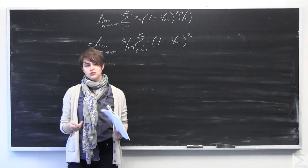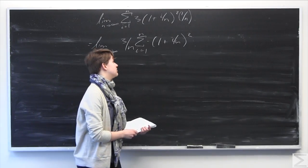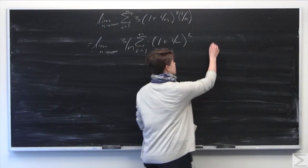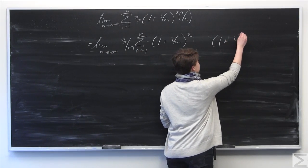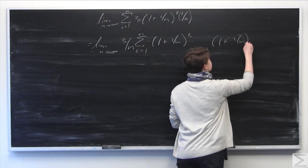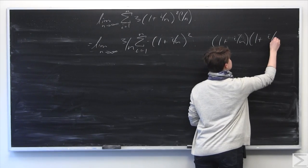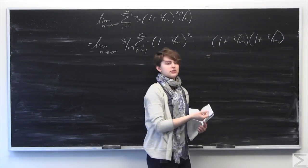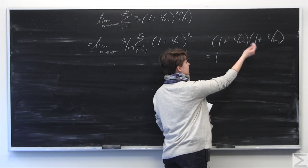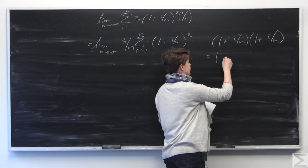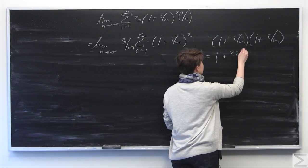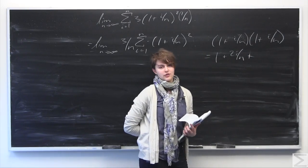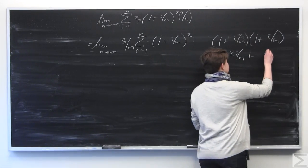Our next step is to FOIL out (1 plus i over n) squared. So (1 plus i over n) times (1 plus i over n) equals 1 times 1, which is 1, plus i over n plus i over n, which is 2i over n, and then i over n times i over n, which is i squared over n squared.